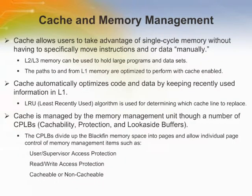Cache is the first level of memory reached once the address leaves L1. Cache allows users to take advantage of single-cycle memory without having to specifically move instructions or data manually — in other words, it eliminates the need to set up a DMA and move data or instructions in the background. L2 and L3 memory can be used to hold large programs and datasets. The paths to and from L1 memory are optimized to perform with cache enabled. Once a cache line transfer occurs, nothing can interrupt that cache line fill, so it has high priority over other transactions.